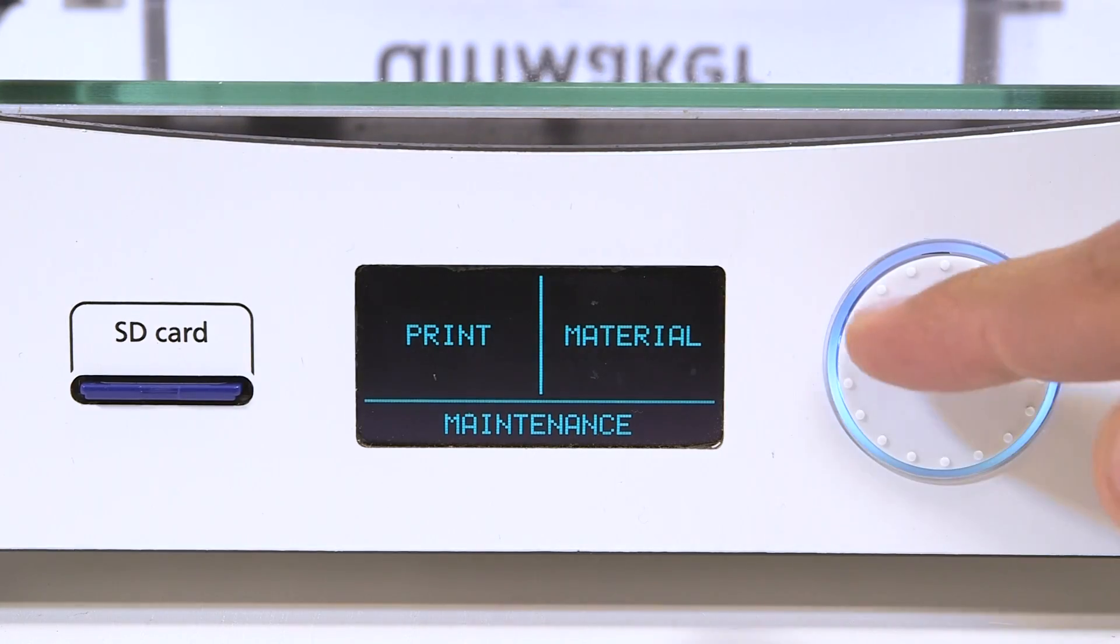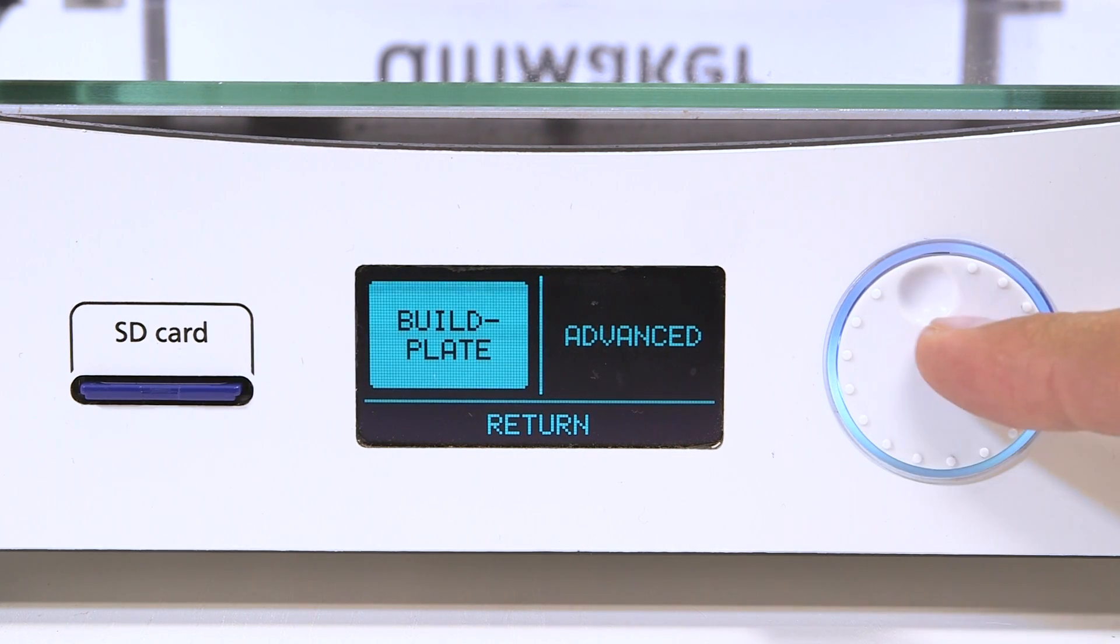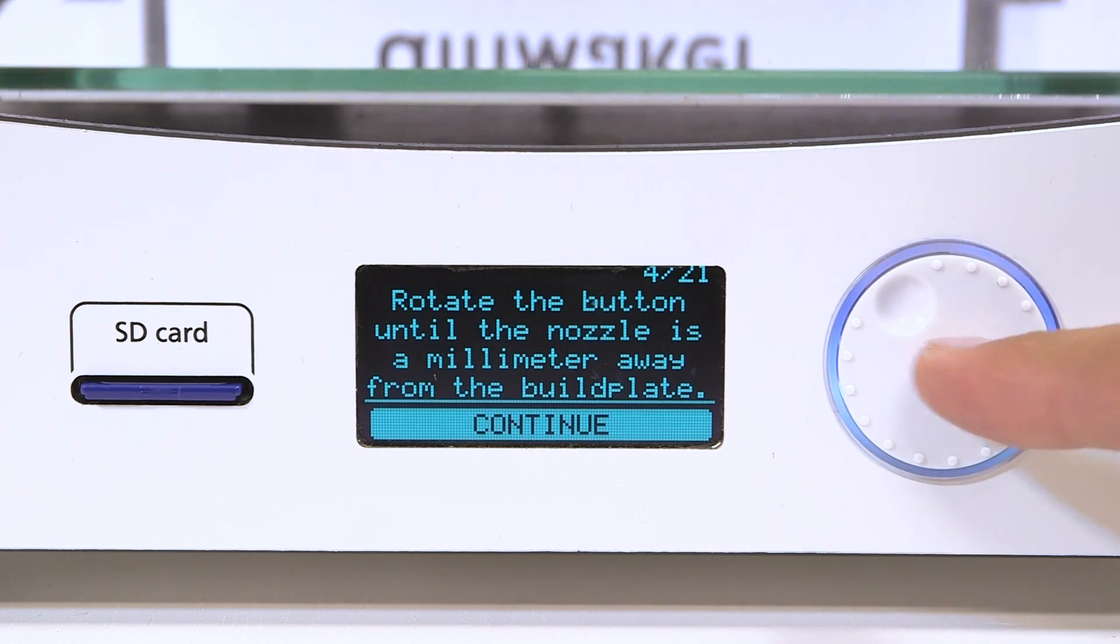Because the nozzle in the Olsen Block is at a different height than the stock nozzle, we recommend re-leveling the build plate. And before you start printing, don't forget to set the new nozzle size in your installation of Cura.